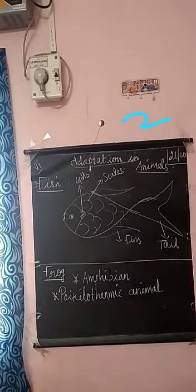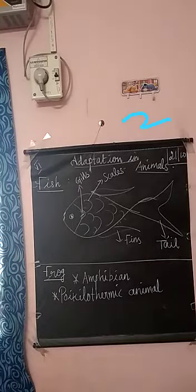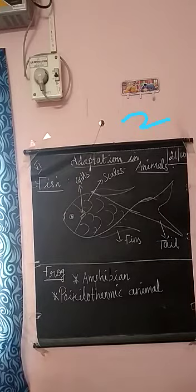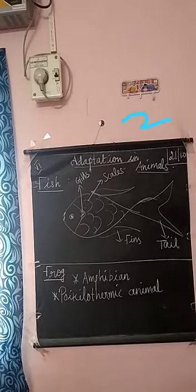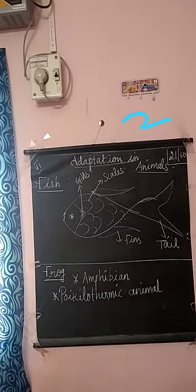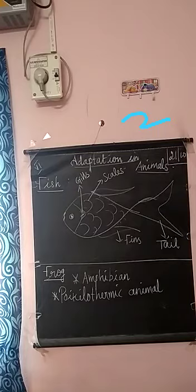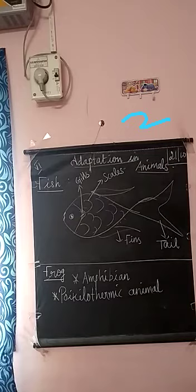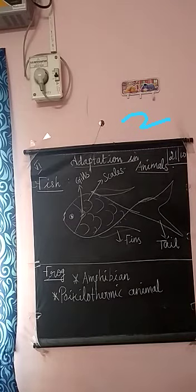Next is the frog. Frogs come under amphibians. Amphibians are animals which can live in both land and water. So frogs are amphibians — they can live in both water and land.